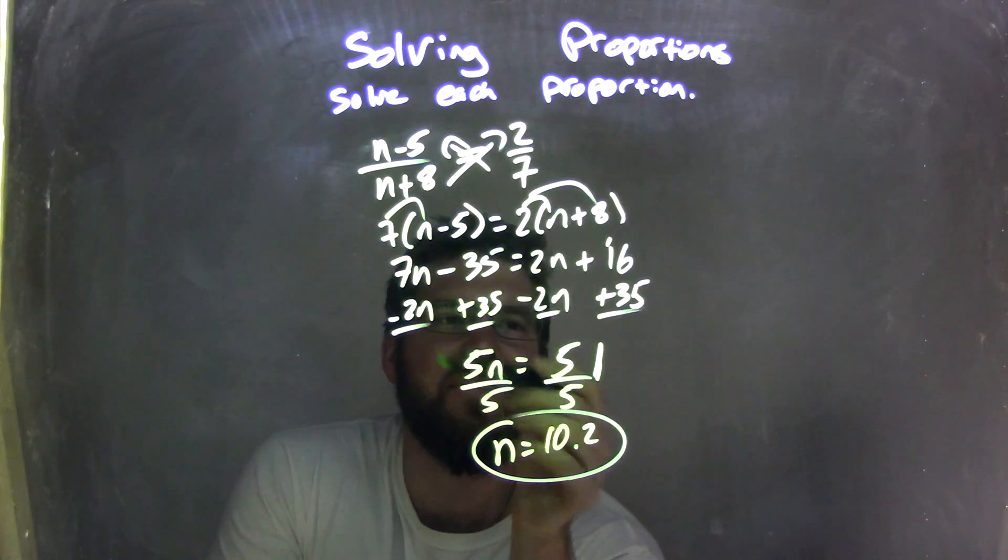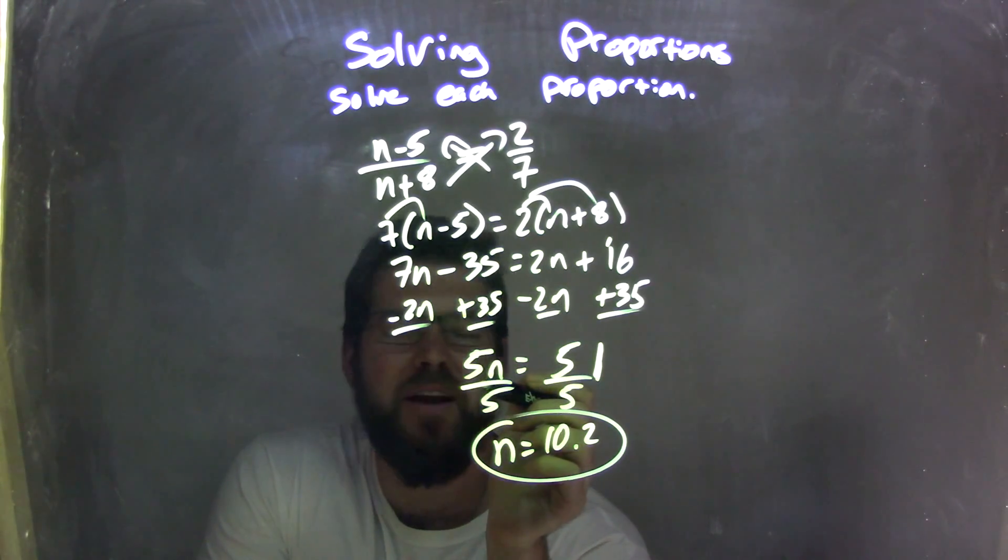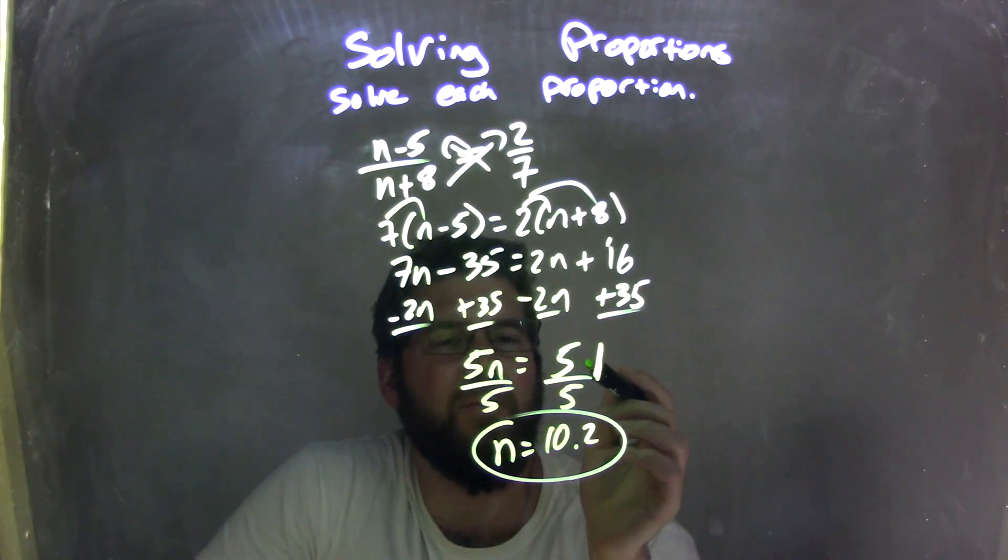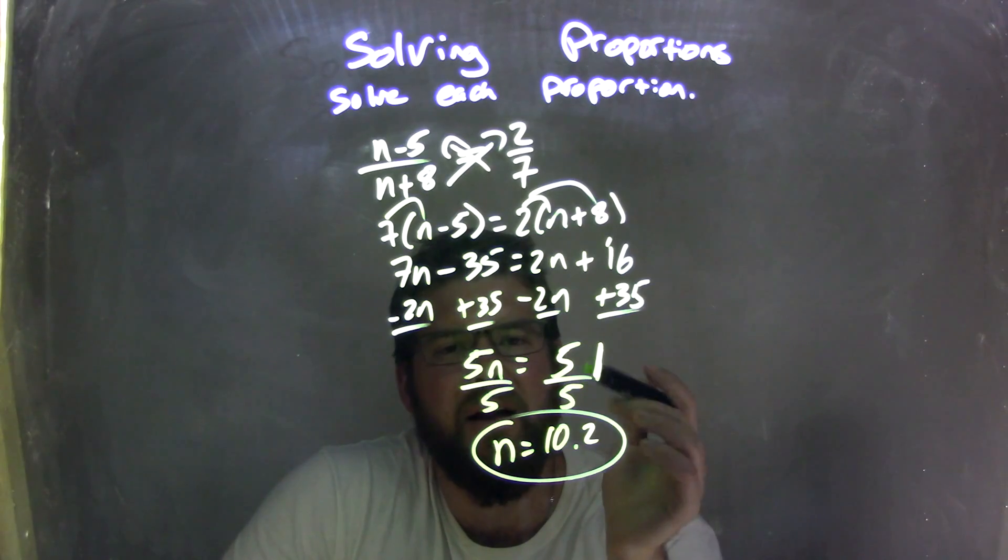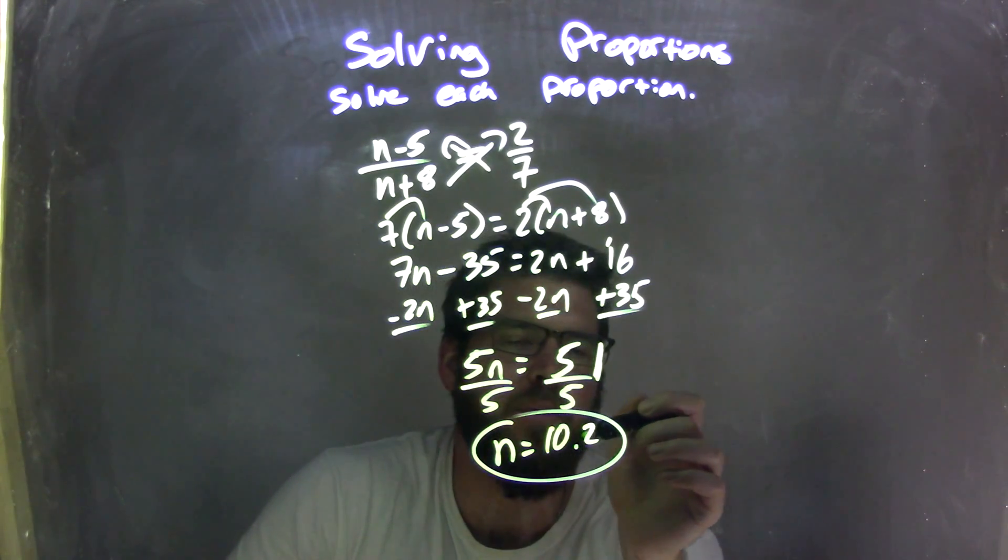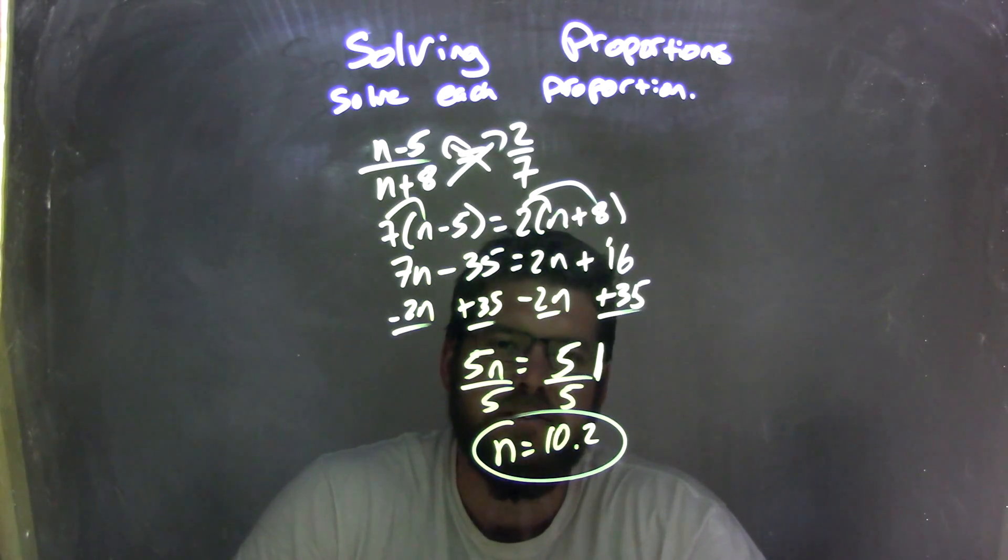I then subtracted the 2n on both sides and added the 35, giving me 7n minus 2n, which is 5n on the left, and 16 plus 35 is 51 on the right. I then divided by 5 to both sides, giving me on the left just n by itself, on the right 10.2. And so my final answer here is n equals 10.2.